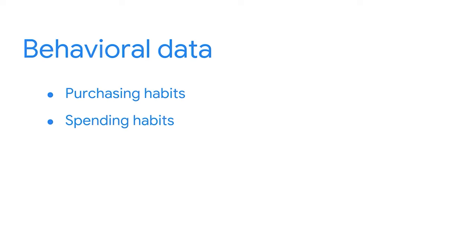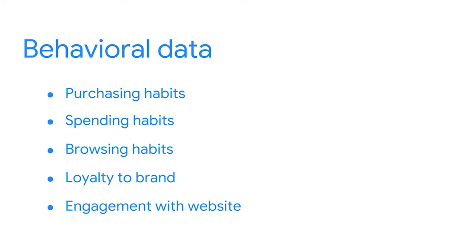Finally, let's talk about behavioral data. Behavioral data refers to the actions your customer takes or doesn't take when it comes to shopping on your website. This is one of the most important categories because it gives you a glimpse into how a customer engages with your specific brand and products. Purchasing habits, spending habits, browsing habits, loyalty to your brand, and engagement with your website are all great ways to segment by behavioral data. For example, knowing whether a subscriber is visiting your site for the first time or is a long-time customer can help you change your messaging — sending a new customer "it's nice to meet you, here's 10% off" versus sending a loyal customer "it's great to see you again, here's 10% off on your favorite team's gear."